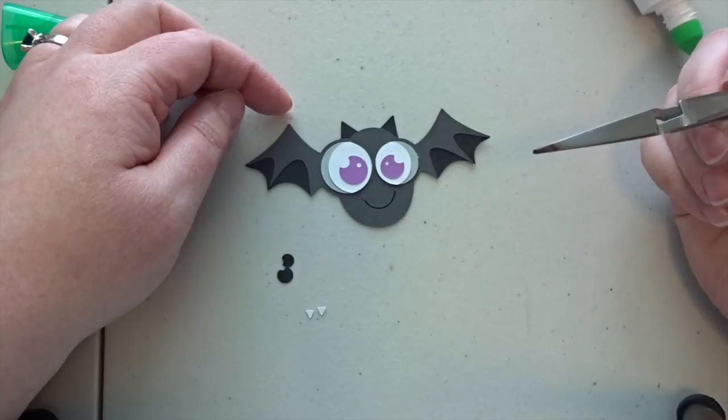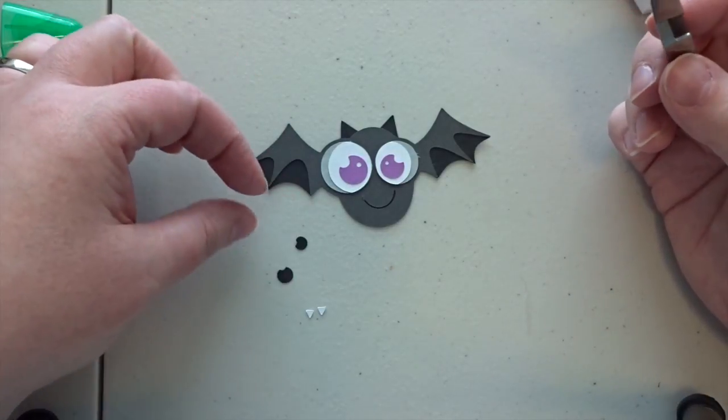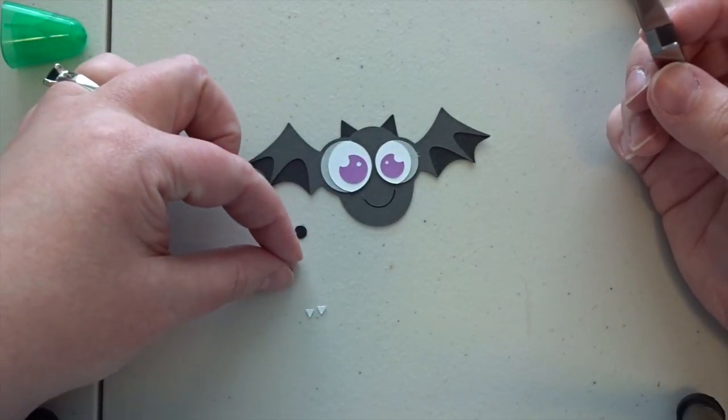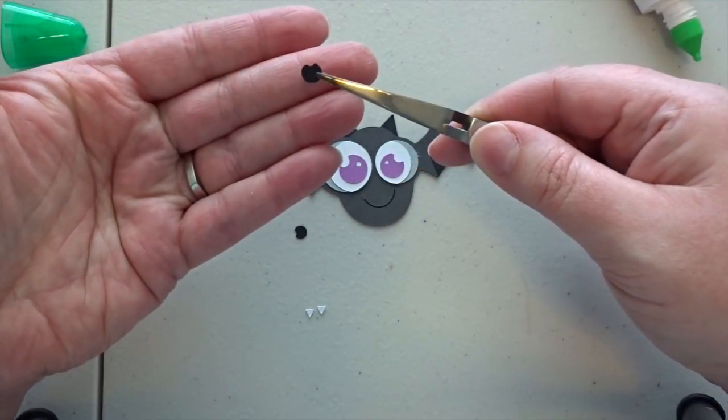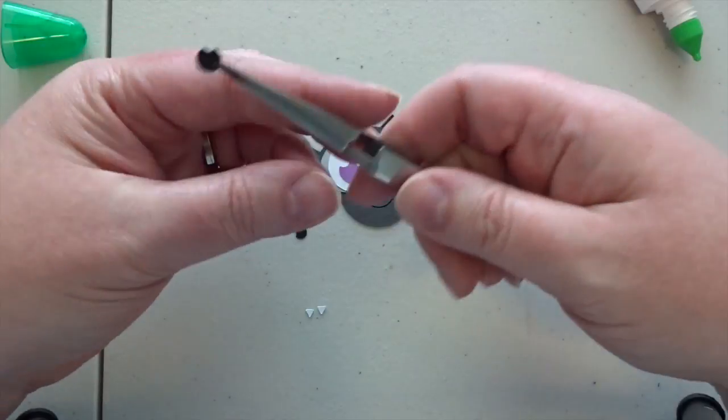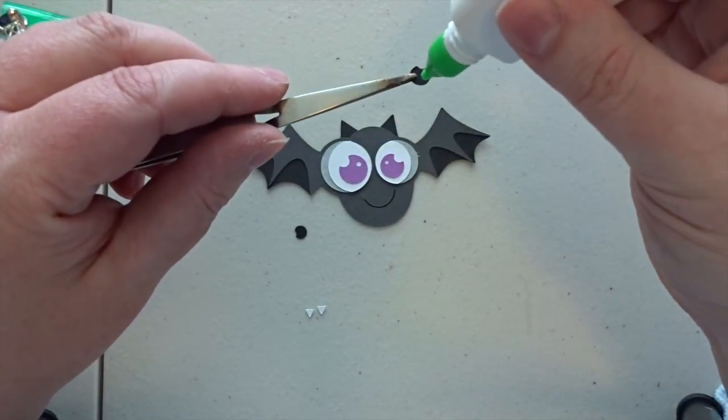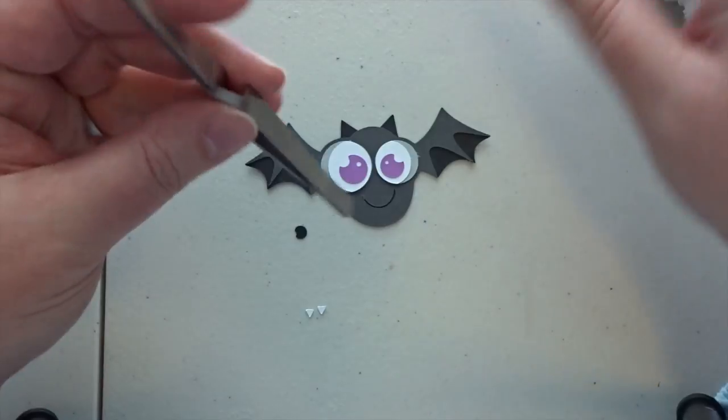And the final bit is the pupil of the eye. And see, the pupil has that little notch out of the top and you'll see what I do with that. Little bits of glue.